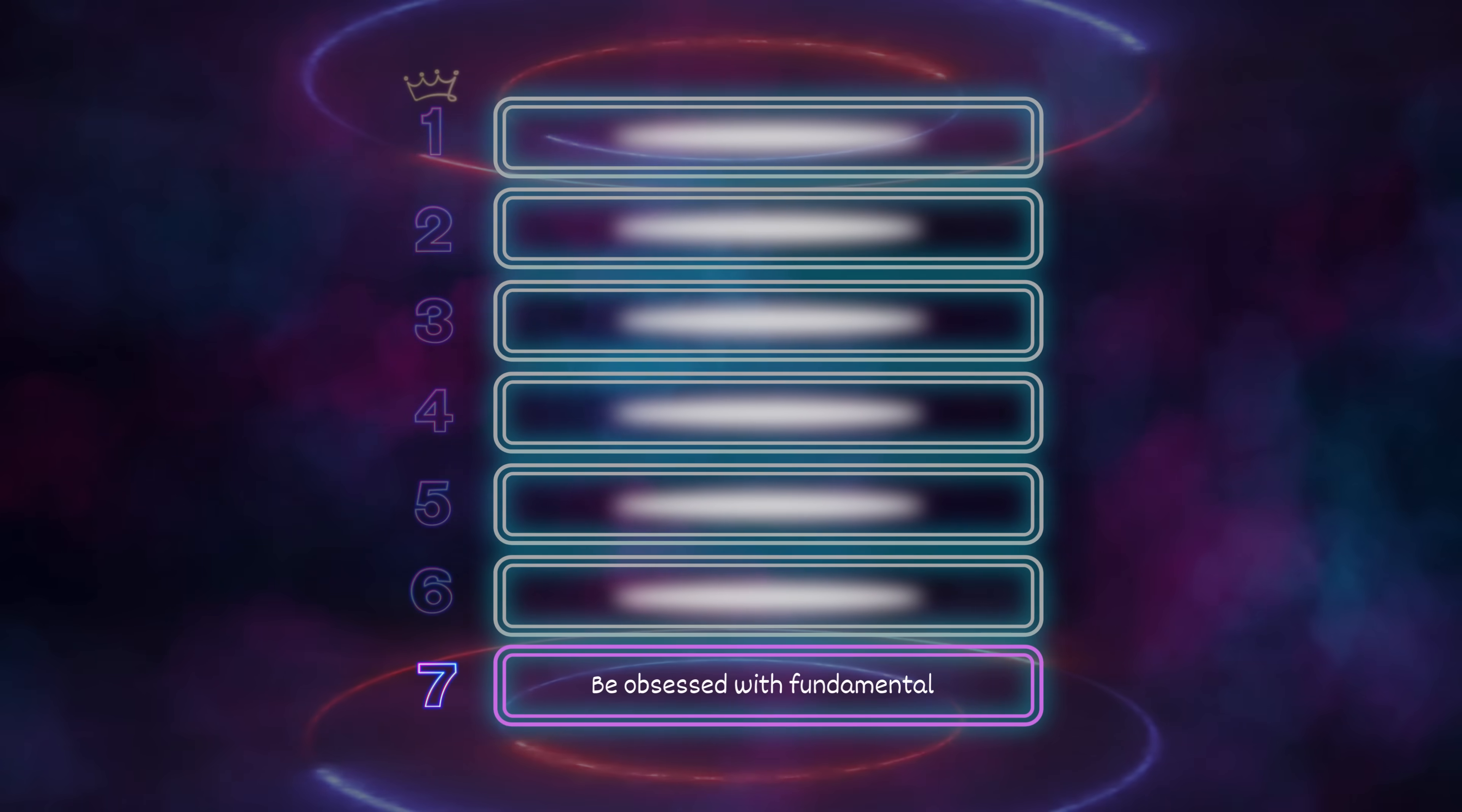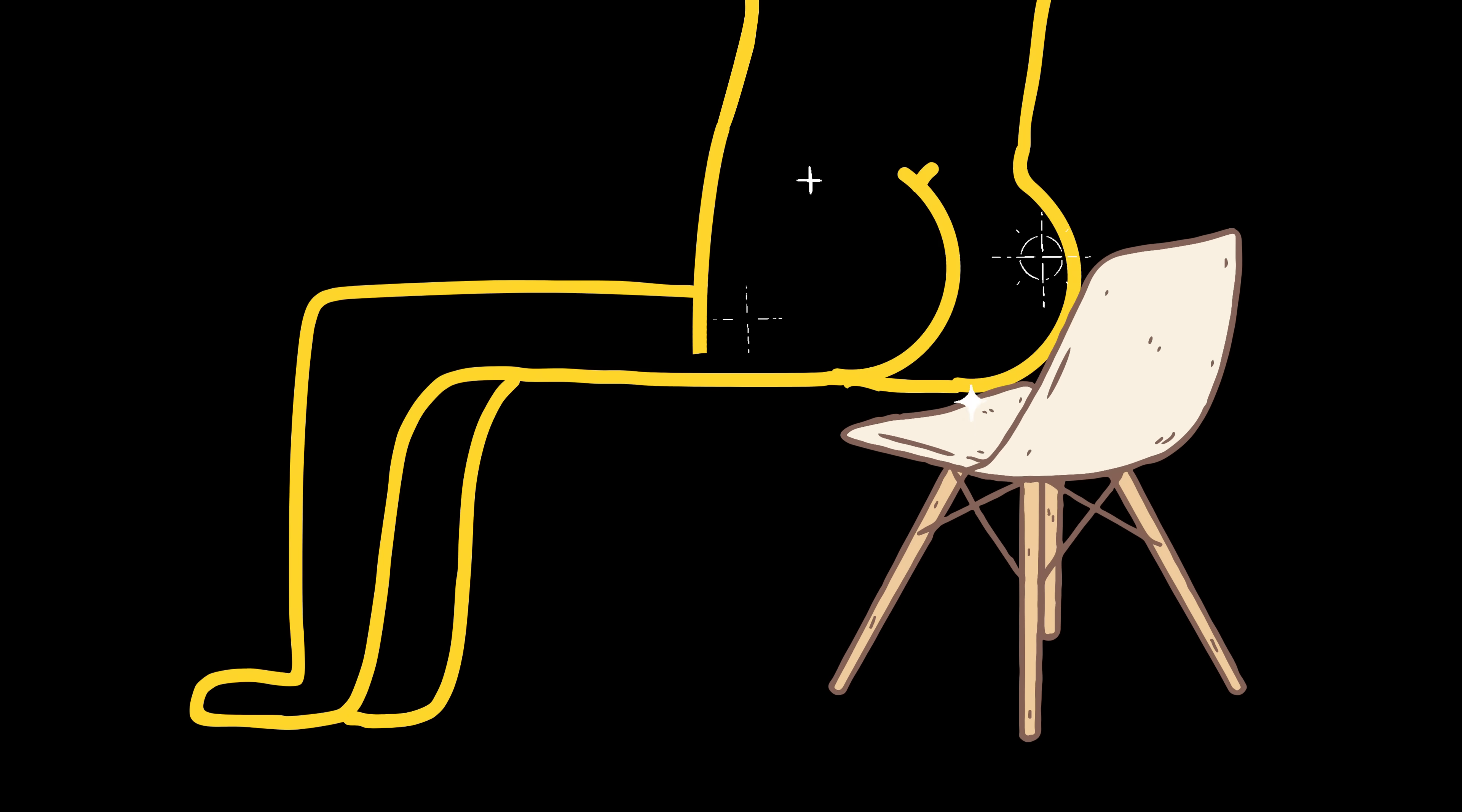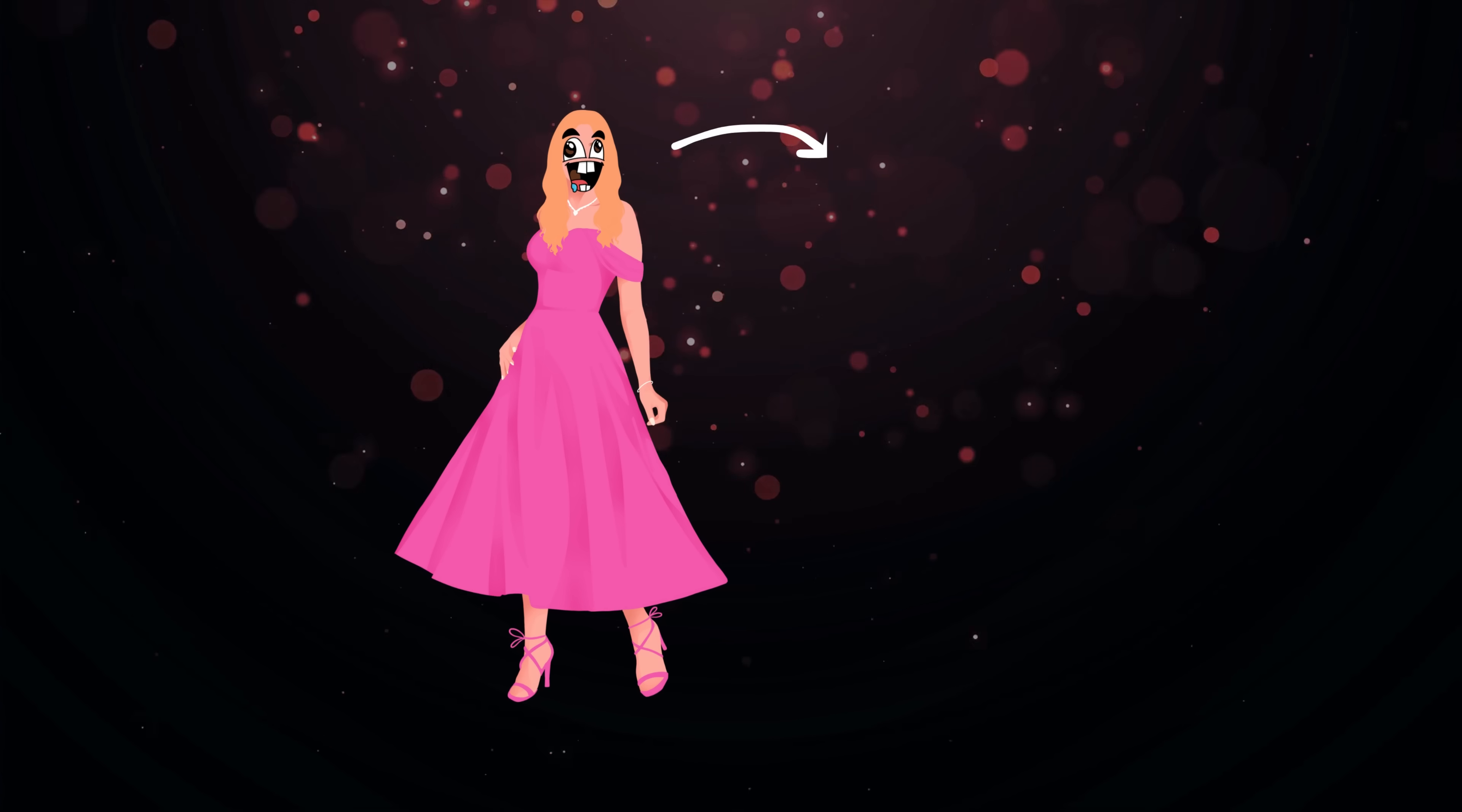Number 7: Be obsessed with fundamentals. Look at you waltzing into calculus like some math Disney princess, thinking you're special just because you watched one YouTube video on integrals. Sit your delusional royal ass down. You can't even do long division without using your fingers. But you're out here acting like you're ready to solve quantum physics. That's not ambition, that's stupidity in a prom dress.